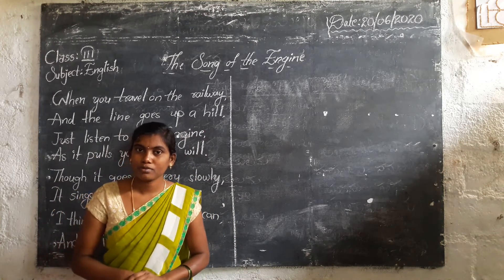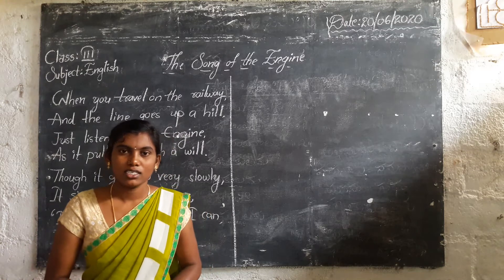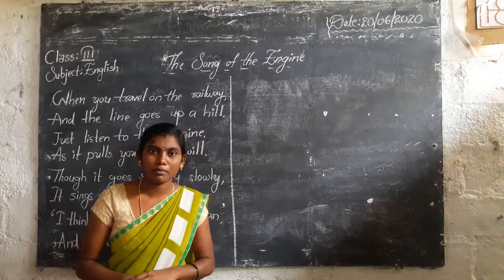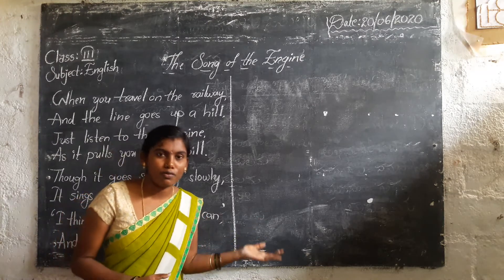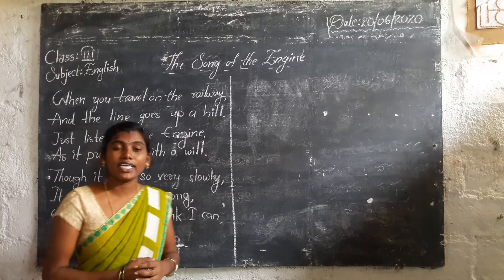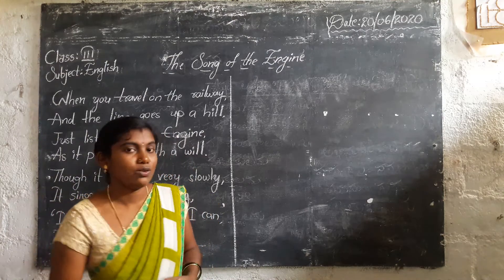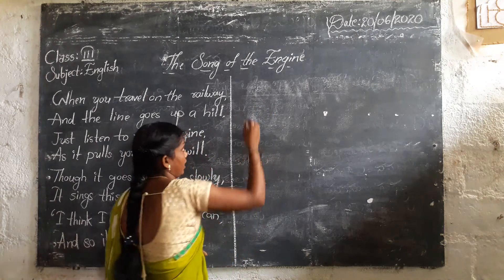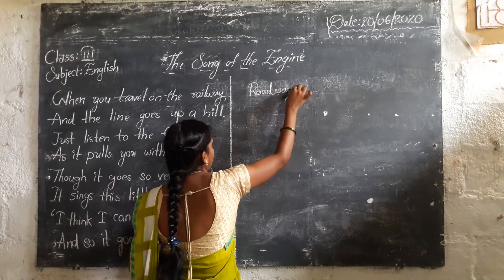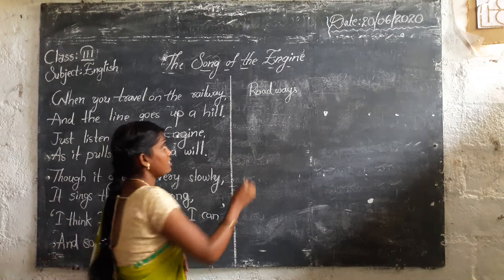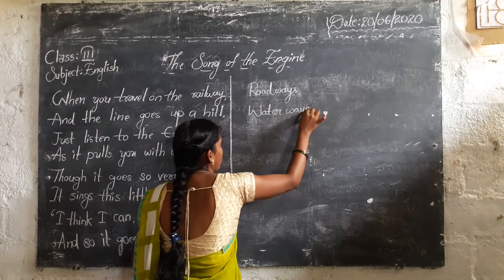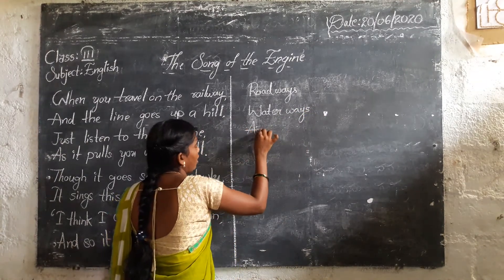We are going by bus. You are coming to the school, so how are you coming? You are coming by our school bus. So we have so many transportation facilities. We have three types of transportation facilities. What are they? The first one is roadways. The next one is waterways. And the last one is airways.